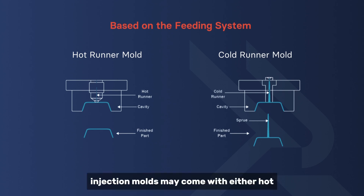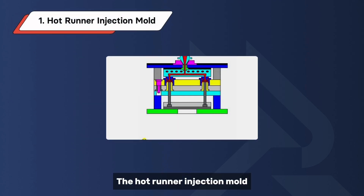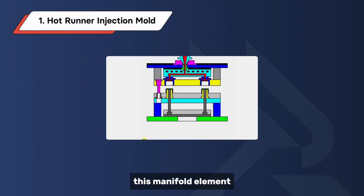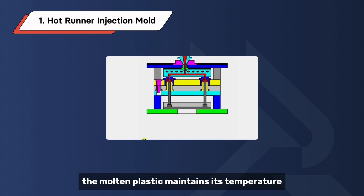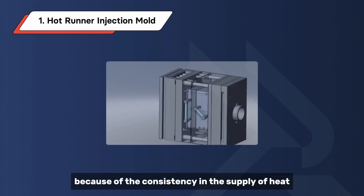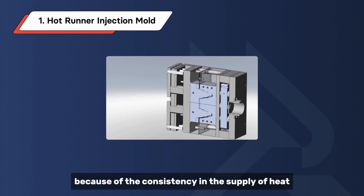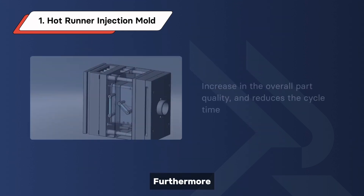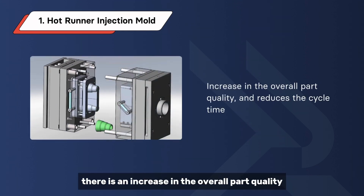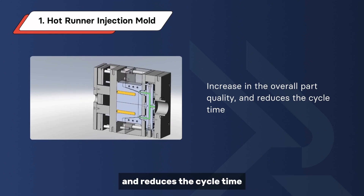Injection molds may come with either hot runner or cold runner systems. The hot runner injection mold has a manifold element that heats the runner. This manifold element can either be inside or outside the mold. As a result, the molten plastic maintains its temperature as it fills the mold cavity. Because of the consistency in the supply of heat, the material cools rapidly and evenly, increasing overall part quality and reducing cycle time.